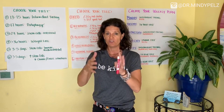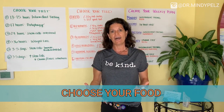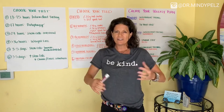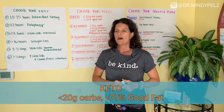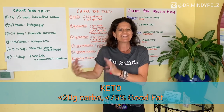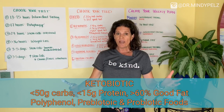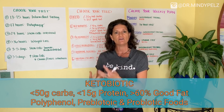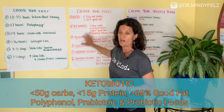Now you want to choose what kind of eating style you're going to have. I teach six different eating styles. The first is classic keto: keeping your carbs under 20 grams net carbs and your good fat above 75% of daily intake. The second, which I teach more on my channel, is keto biotic: keeping net carbs under 50 grams, protein under 15 grams, and about 60% of your diet from good fat.